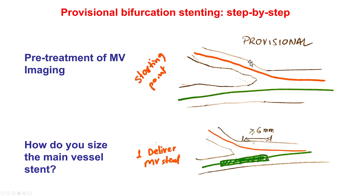If there is less than 6 to 8 millimeters of stent proximal to the bifurcation when we do the proximal optimization, we will injure the vessel proximal to the stent, and that can lead to increased risk for stenosis. So once again: diameter based on the distal main vessel, length enough to have at least 6 to 8 millimeters proximal to the bifurcation.